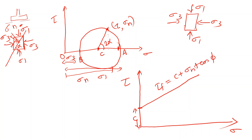This equation is tau equals c plus sigma-n times tan phi. We can solve for shear strength using this Mohr-Coulomb criterion. For a particular element we identify the major principle stress and minor principle stress. Similarly, for a linear failure envelope the corresponding relationship holds.